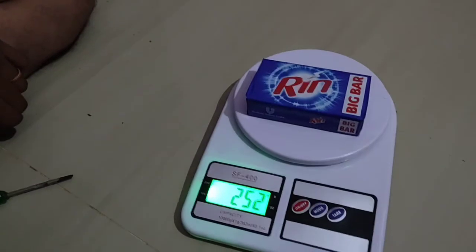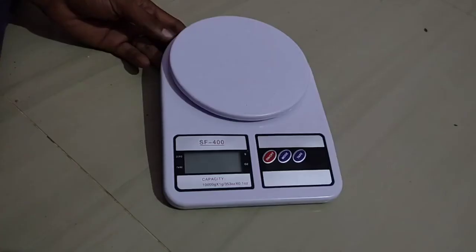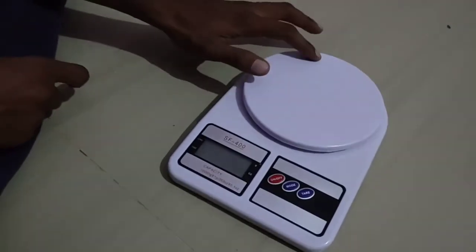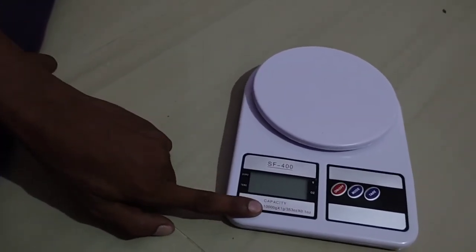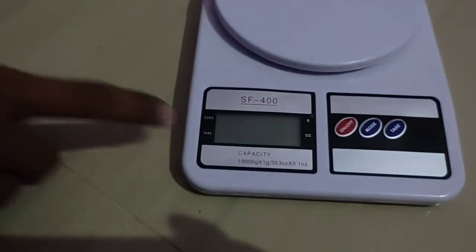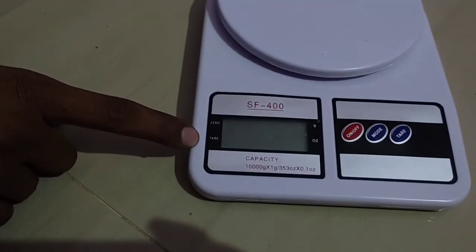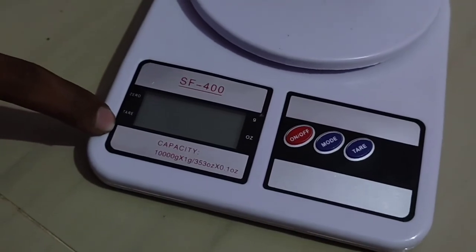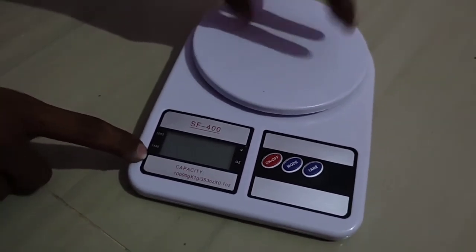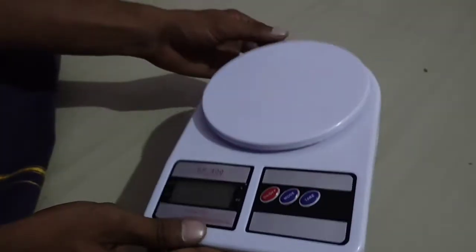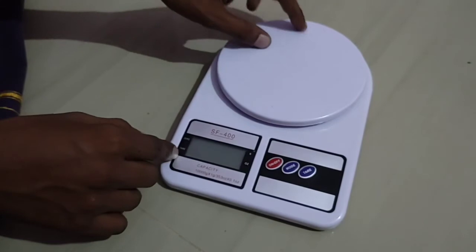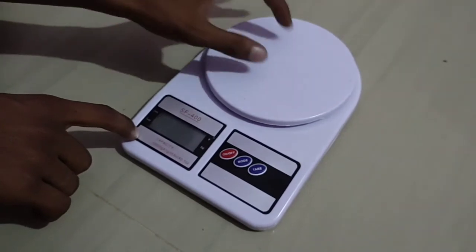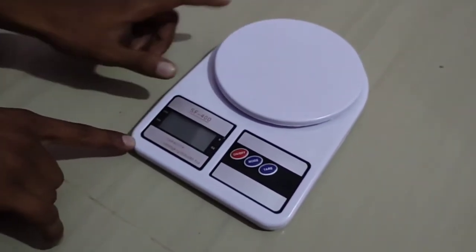Thank you for watching the video. The kitchen scale has been repaired. It was showing overweight. The capacity is 10kg. It has a plastic body. The screw was loose, so tightening it fixed the problem.